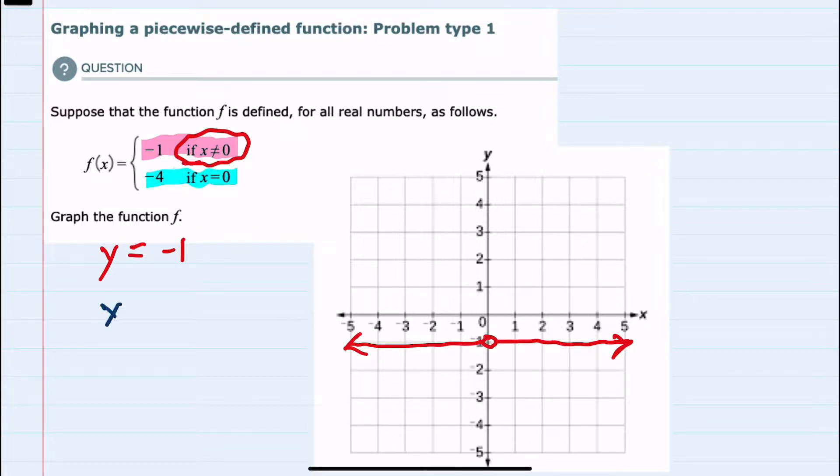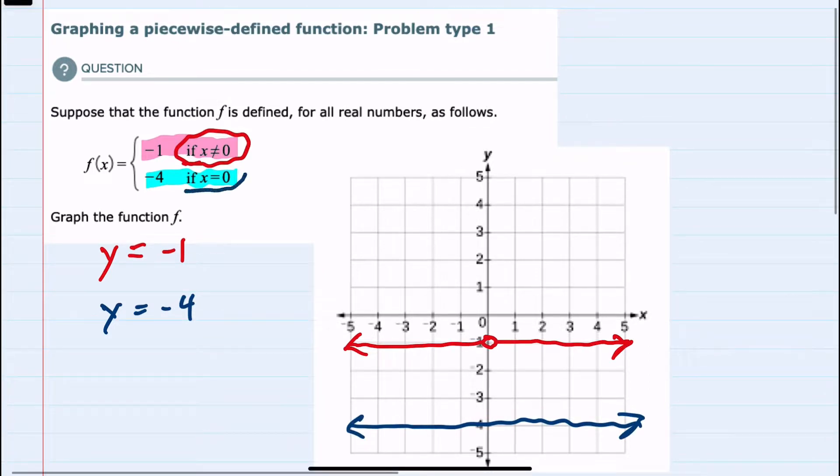our f(x) or y will be negative 4, which is also a horizontal line, this time through negative 4. We only use this line where x is equal to 0.